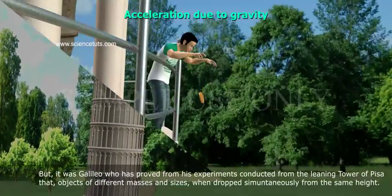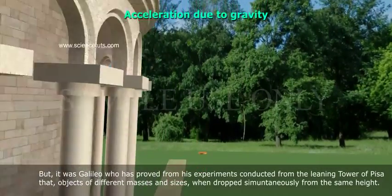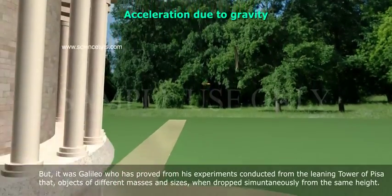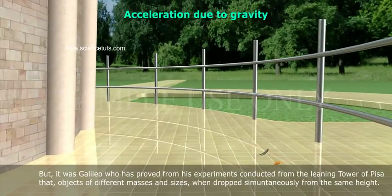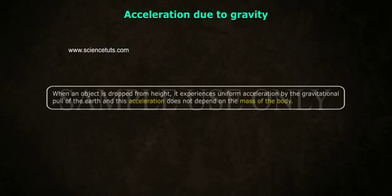But it was Galileo who proved from his experiments conducted from the Leaning Tower of Pisa that objects of different masses and sizes, when dropped simultaneously from the same height, would reach the ground at the same time.